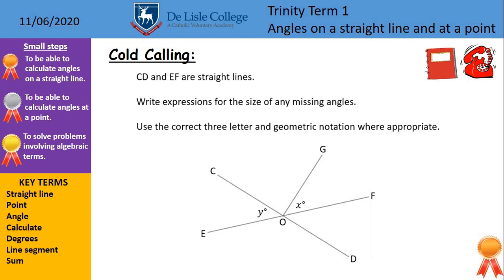Let's have a look at a diagram here then. We're told CD and EF are straight lines, and we're going to write expressions for the size of any missing angles. So we don't know the exact angle by any means whatsoever, but we can write down how we would work them out. Use the correct three letter and geometric notation where appropriate to figure out the missing angles. I'd just like you to have a go, see how many you could write down.